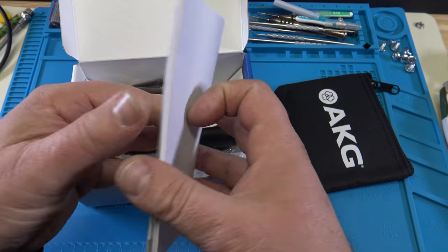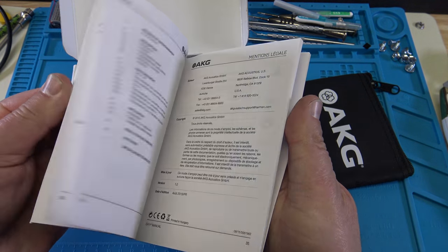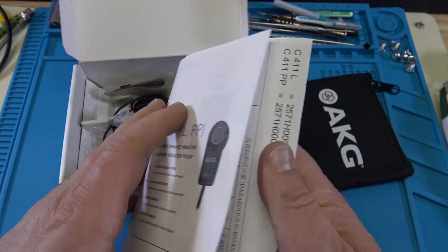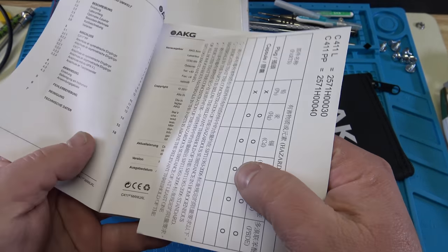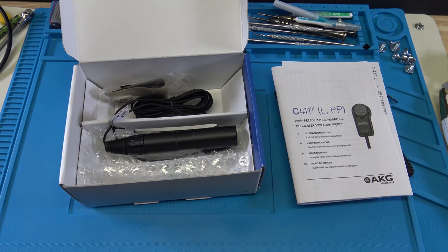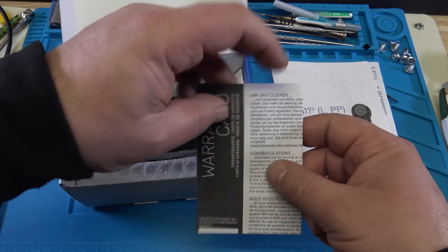A manual in different languages. This here is a warranty card that just fell down. Let me fish that up. Warranty card.